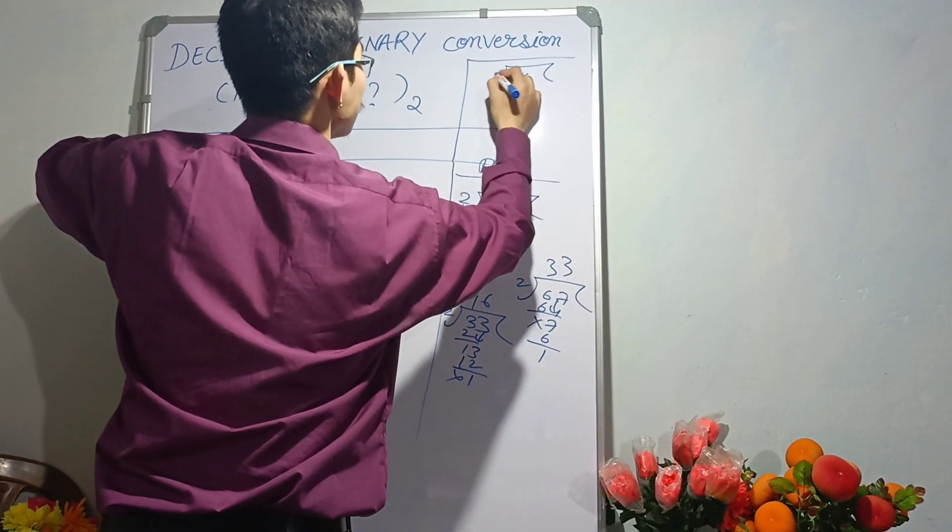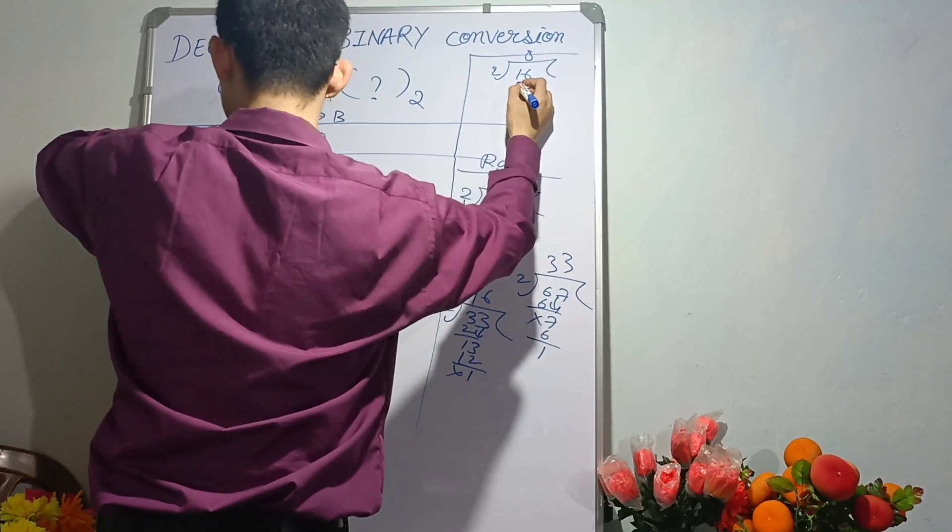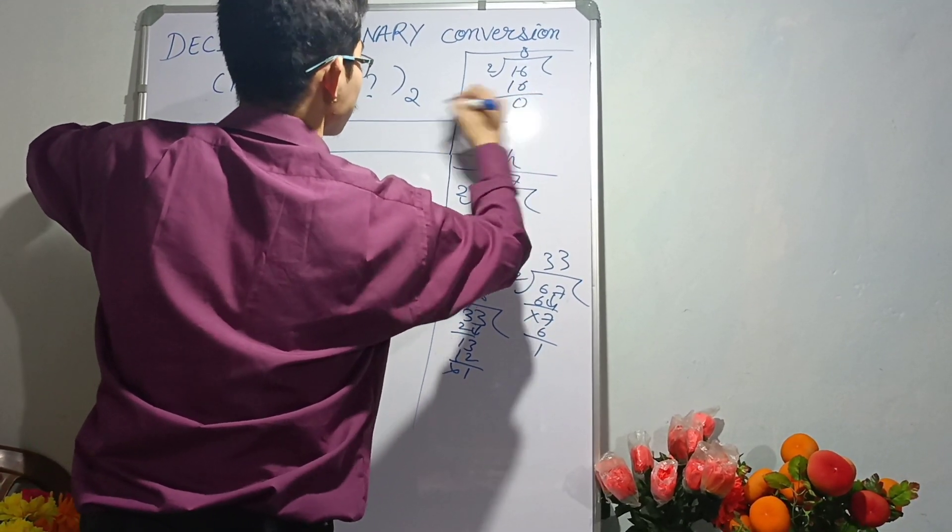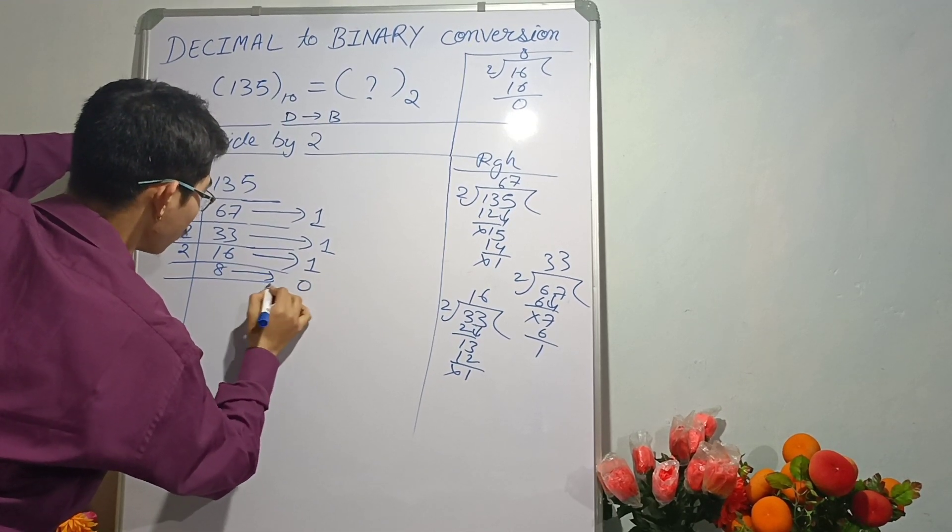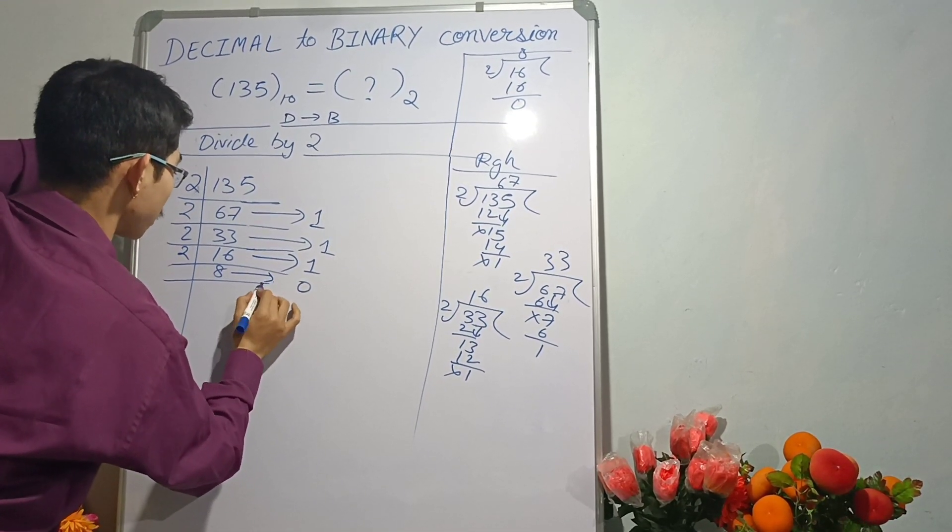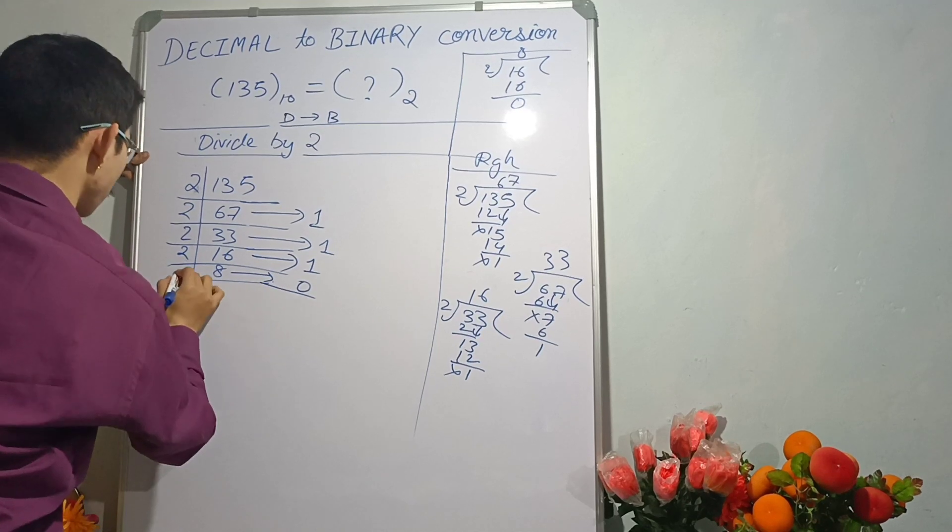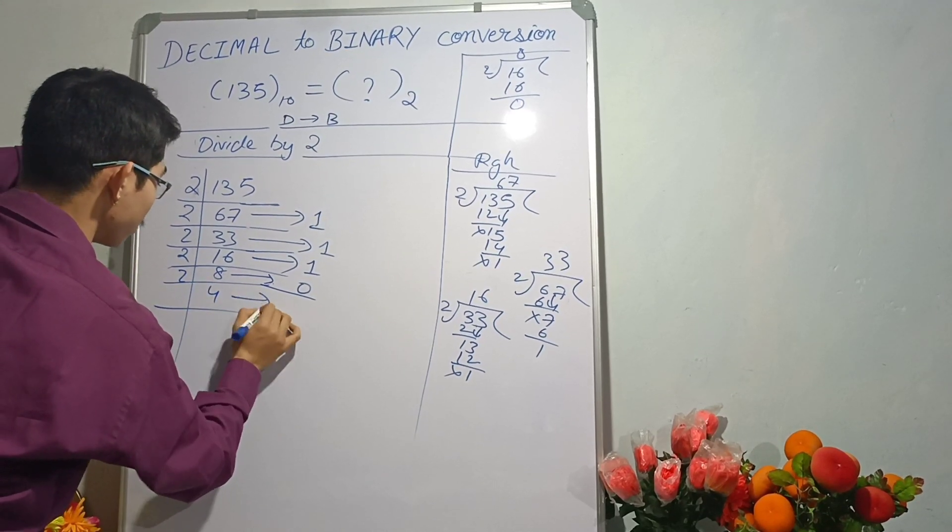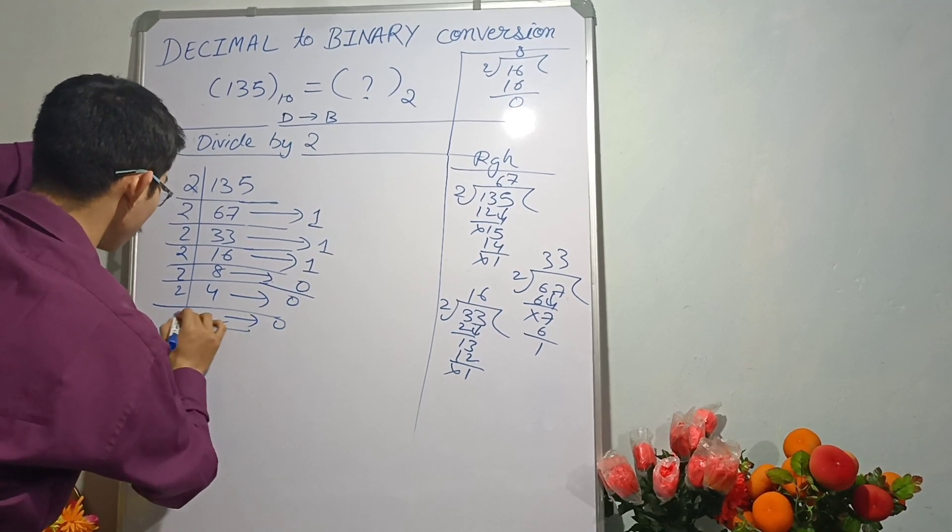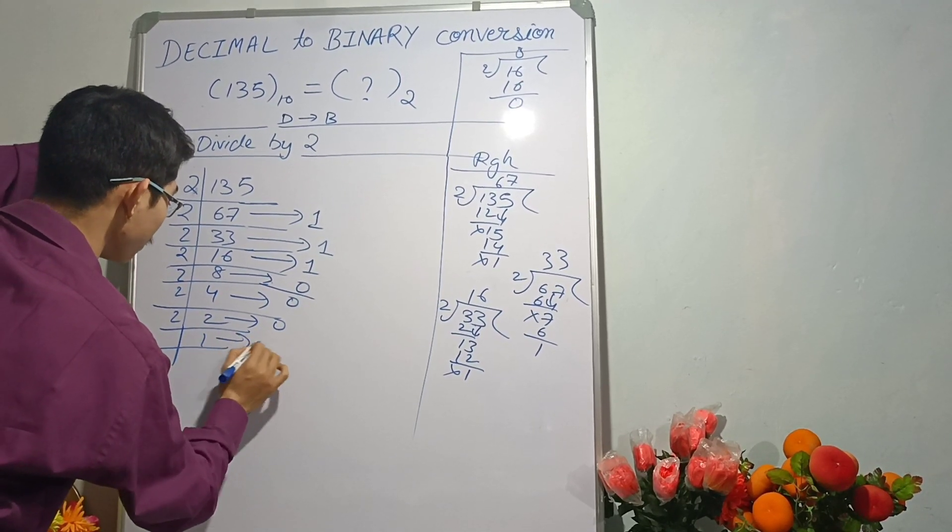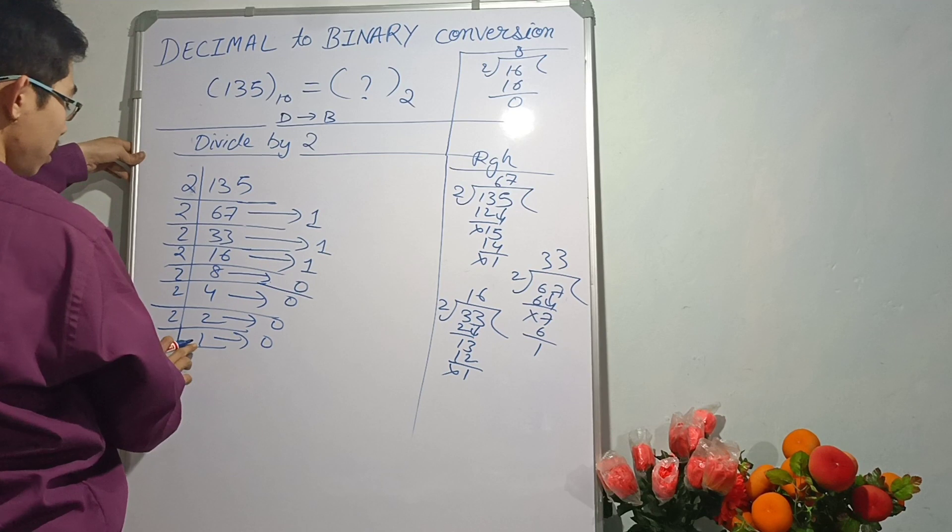Let's do this. 2 into 8 is 16, remainder is 0. 8 into 16, remainder is 0 here. Now 2 times 4 is 8, remainder is 0. 2 times 2 is 4, remainder is 0. 2 times 1 is 2, remainder is 0. Now let us see this part.